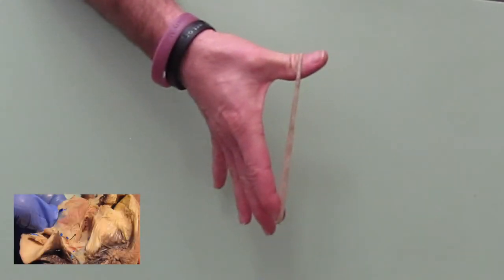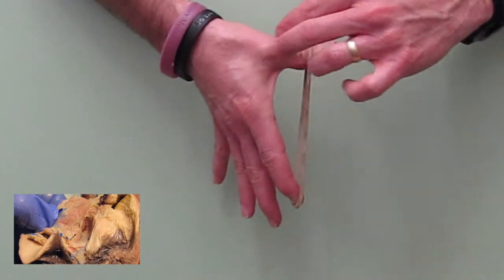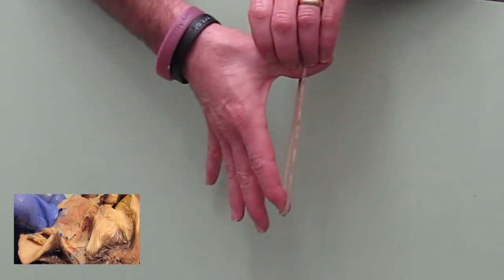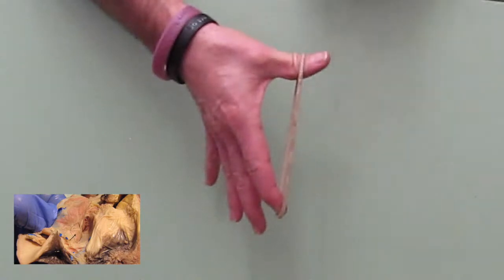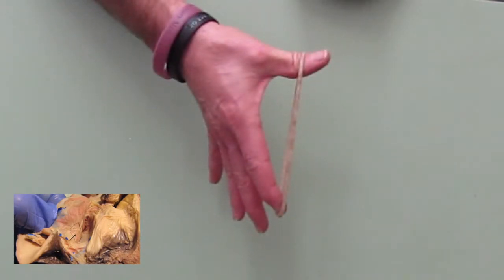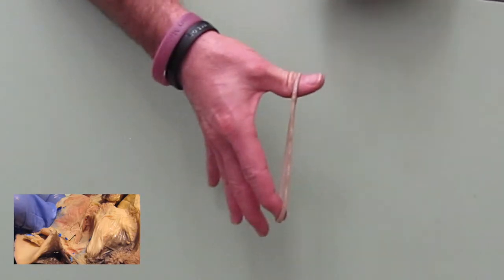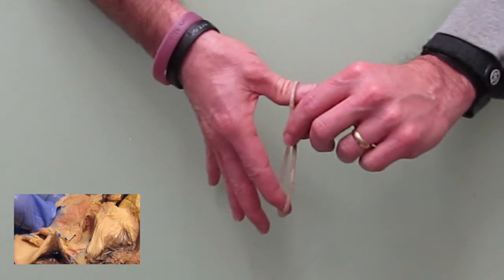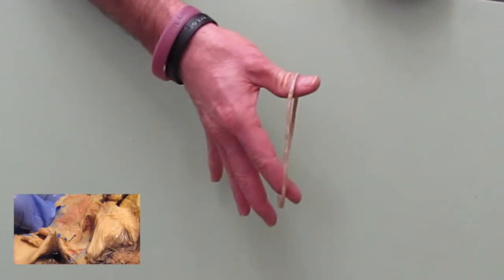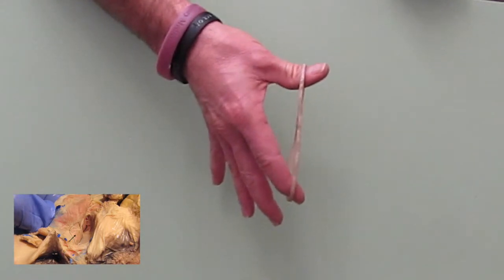Okay, so now let's just say that this is the thyroarytenoid muscle attaching here to the arytenoid cartilage, and this is the vocal fold. Now the thyroarytenoid muscle, when it contracts, it's going to pull the arytenoid cartilage ventrally, and it's going to loosen the vocal fold, which will then have an effect on lowering the pitch. It also is going to somewhat close the airway.